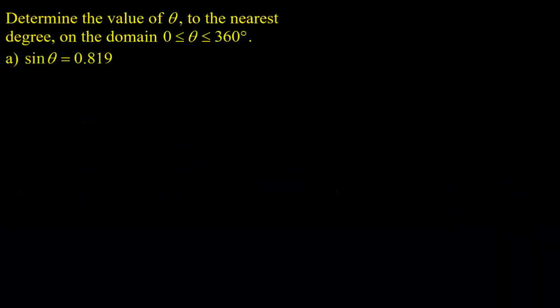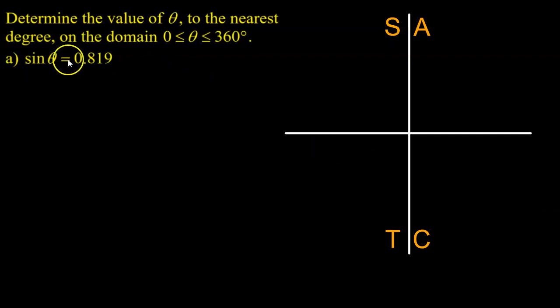In our first example you're asked to determine the value of theta in degrees to the nearest degree on the domain 0 to 360 degrees, and the equation is simply sine theta equals 0.819. We'll start with the coordinate plane and apply CAST rule right away. I've written letters here for each quadrant demonstrating which quadrants those ratios are positive. Now we're looking where sine is equal to a positive 0.819. I don't care too much about 0.819 when I first start, I just care that it's positive. When I look at CAST rule, quadrants 1 and 2 is where I will find sine ratios to be positive.